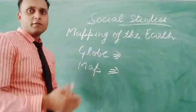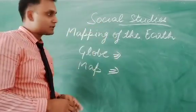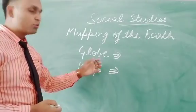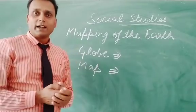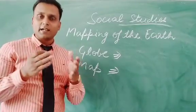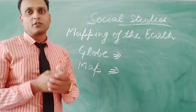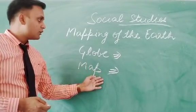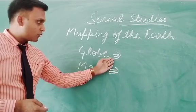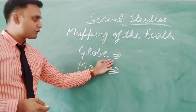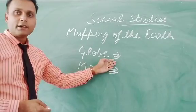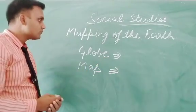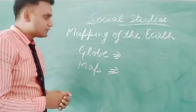Later on, when time passed, they needed to develop some tools which were very easy to handle and which were very exact in defining the location and direction of a place. So they invented globe and map. What are the different uses of globe and map? How are they different from each other? What are the advantages and disadvantages of these both elements of mapping? Now, come to the point — what is a globe?